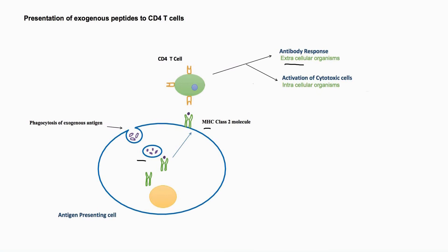In addition to dendritic cells, which are the main antigen presenting cells, and macrophages, B cells can also present antigens. These cells have B cell receptors on their surface, which are IgM and IgD molecules. Antigens attached to these receptors are first ingested by B cells and then processed in the cell. The processed antigens are then combined with HLA class 2 molecules and presented on the cell surface.